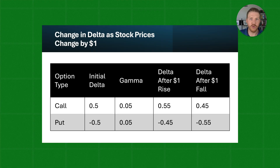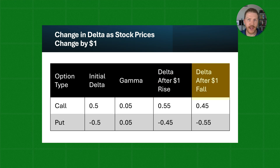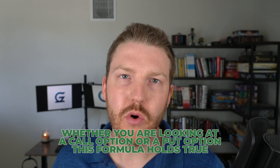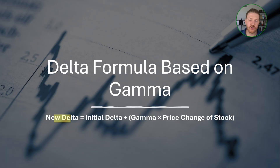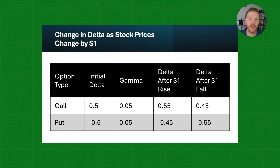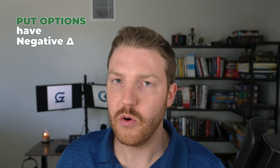One thing you'll notice is that regardless of whether we're looking at a call or a put, when the stock price rises, the gamma is added to the initial delta, whereas if the stock price falls, the gamma is subtracted from the initial delta. This universal formula holds true: the new delta should be roughly equal to the initial delta plus gamma times the price change of the stock. So if the price change of the stock is positive, the new delta should always be higher than the initial delta, whereas if the price change is negative, the new delta will always be lower — universal for both calls and puts.